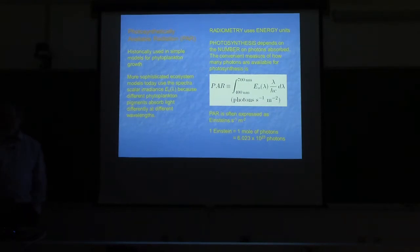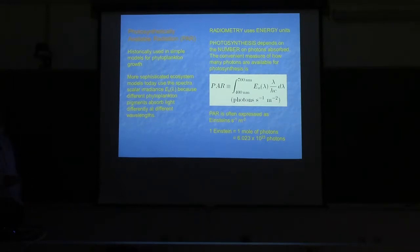PAR is a broadband thing you've integrated over all wavelengths, so you've lost any information about wavelength dependence. Some people use 350 to 700, some use 400 to 700. Later ecosystem models are starting to use spectral scalar irradiance.